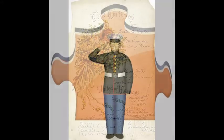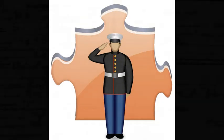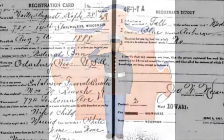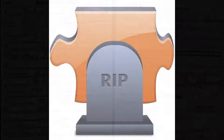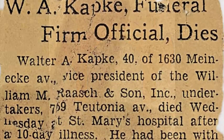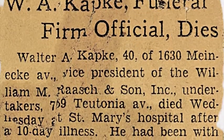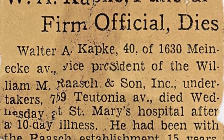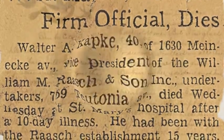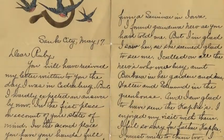Into the Military folder, we drag Walter's World War I draft registration card. And into the Death folder, we drag and drop Walter's obituary from an April 1929 Milwaukee newspaper and a condolence letter written to Walter's wife, Ruby, from her aunt, Augusta Runge.